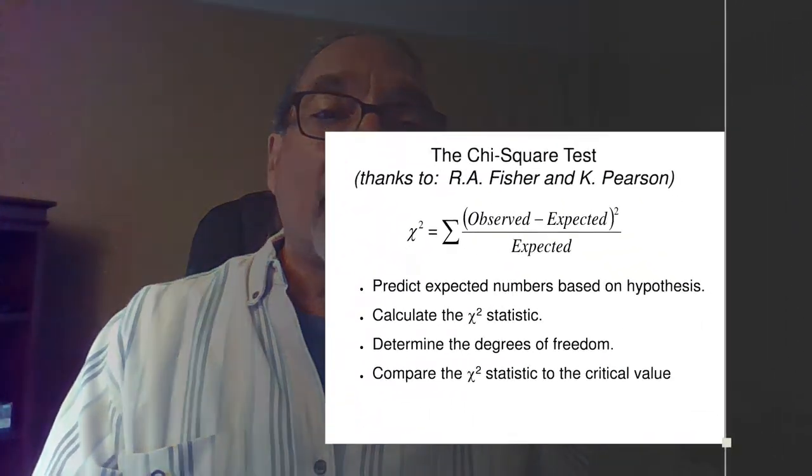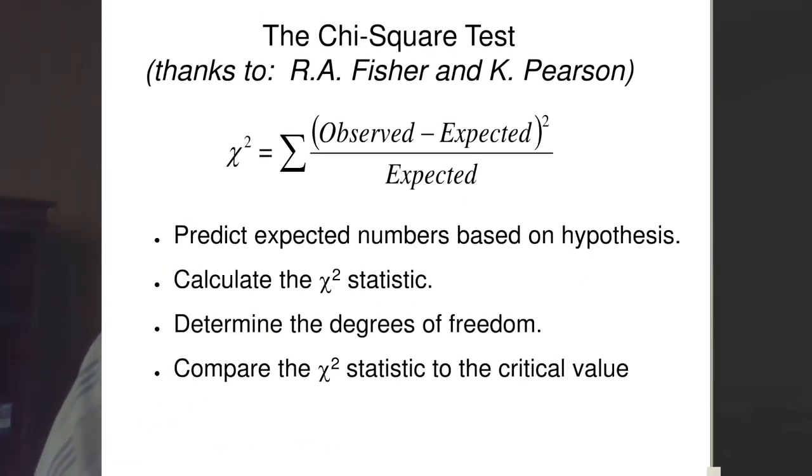R.A. Fisher and his student Carl Pearson came up with the idea of the chi-square test. You may have heard of Carl Pearson in some of your other courses. Pearson was the individual who came up with the Pearson correlation coefficient. Anytime you hear about two statistics that are correlated, it's usually the Pearson correlation coefficient that's been counted.